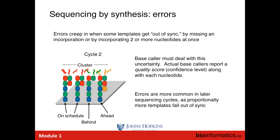In this example, we're on cycle two. There are two molecules with a red base complementary to the green second base of the fragment, one that's lagging behind still on the first base, and one that's jumped ahead to the third base. When the microscope takes a picture of the slide, it's going to see 50% red, 25% green, 25% yellow. This gives a mixed signal that the base caller needs to deconvolve using fairly sophisticated probabilistic models of molecules lagging behind or jumping ahead.